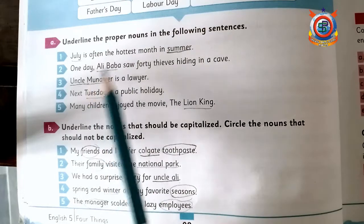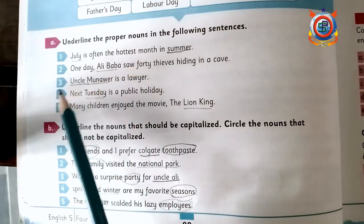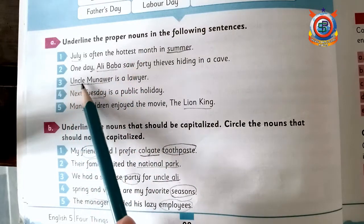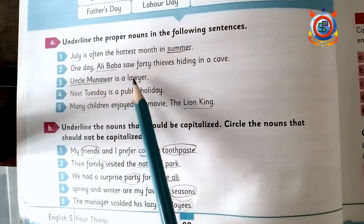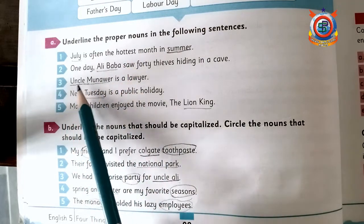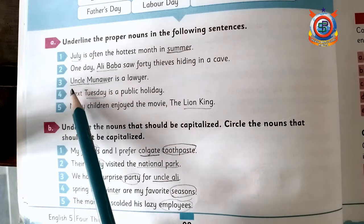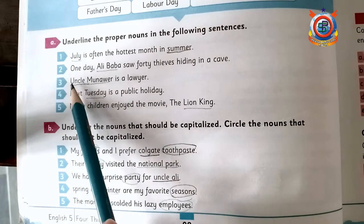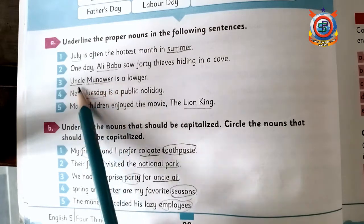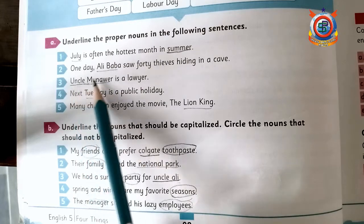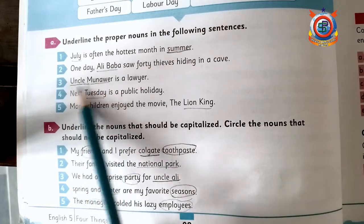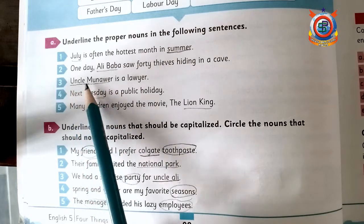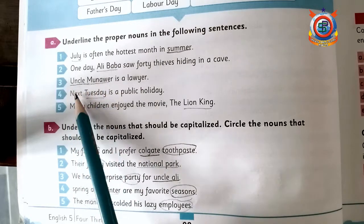Third sentence: 'Uncle Munawur is a liar.' Uncle Munawur is a proper noun, so it is underlined — correct.